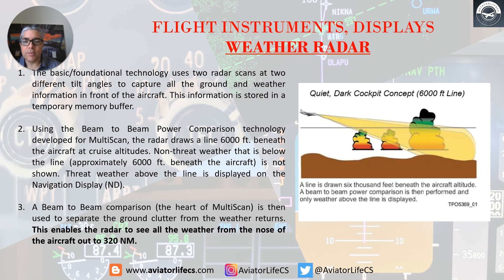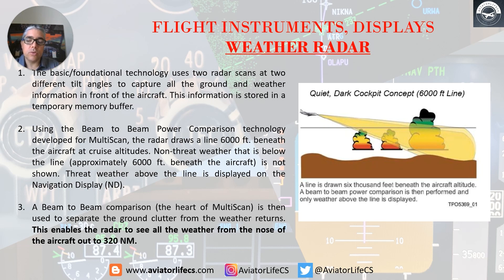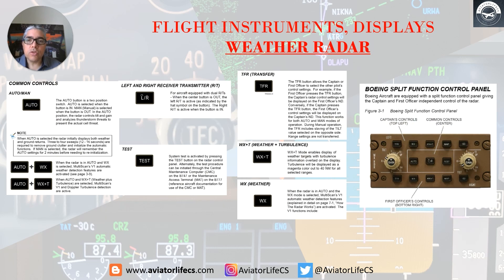Non-threat weather that is below the line — approximately 6,000 feet beneath the aircraft — is not shown. Threat weather above the line is displayed on the navigation display. A beam-to-beam comparison is then used to separate the ground clutter from the weather returns. This enables the radar to see all the weather from the nose of the aircraft out to 320 nautical miles.